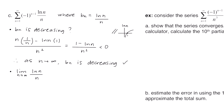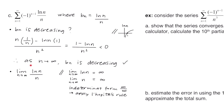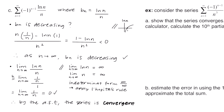Now we check the second condition: the limit as n goes to infinity of b sub n, which is ln(n) over n. The numerator goes to infinity and the denominator also goes to infinity, so this is indeterminate form infinity over infinity, and we apply L'Hôpital's rule. Taking the derivative of the numerator gives 1 over n, and the derivative of the denominator is 1. So the limit as n approaches infinity of 1 over n equals 0. Therefore, by the alternating series test, the series is convergent.